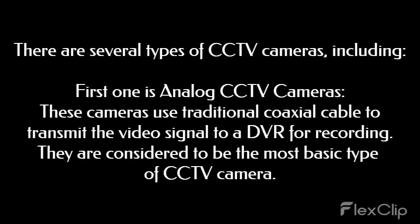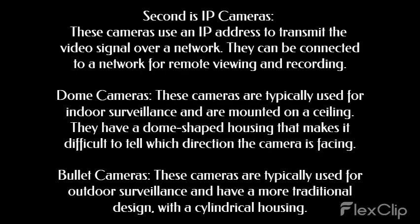There are several types of CCTV cameras. The first is analog CCTV cameras. These cameras use traditional coaxial cable to transmit the video signal to a DVR for recording. They are considered to be the most basic type of CCTV camera.